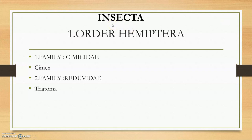Moving to the orders in detail: in order Hemiptera we have two families. Family Cimicidae, with genus Cimex — main species include Cimex lectularius. The next family under order Hemiptera is family Reduviidae, which is very famous. The genus Triatoma — the kissing bug, conenose bug, or assassin bug — is very famous in the transmission of Trypanosoma cruzi.